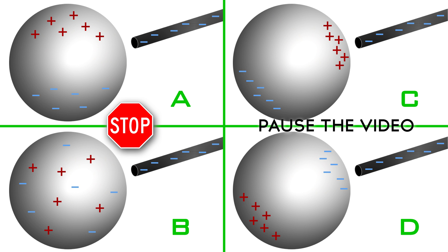Which image below correctly represents the resulting charge on the sphere? Your instructor will now stop the video allowing you to make a prediction. Make sure that you explain your reasoning for making the choice that you did.